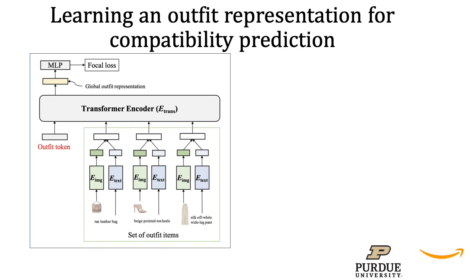Our framework takes as input the set of item images and their text descriptions. We use an image encoder and a text encoder to extract image and text features, and then concatenate them to generate an item feature vector for each item in the outfit. For the compatibility prediction task, we design an outfit token whose state at the output of the Transformer Encoder serves as a global outfit representation that captures higher-order compatibility relationships between all items. This outfit representation is then fed into an MLP that predicts the final outfit compatibility score.